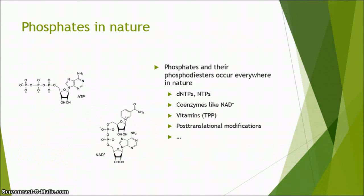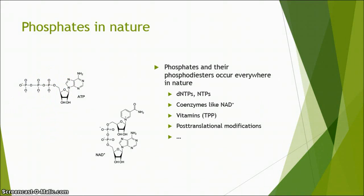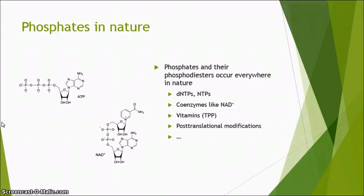When you take one of your many biochemistry textbooks, you will soon realize that phosphates are ubiquitous in nature. Some examples include ATP for storage of energy, nucleotides and deoxynucleotides as the building blocks of nucleic acids, and NAD+ or NADP+ as oxidizing agents in nature. Furthermore, vitamins like thiamine pyrophosphate also contain phosphate groups, just to name a few.